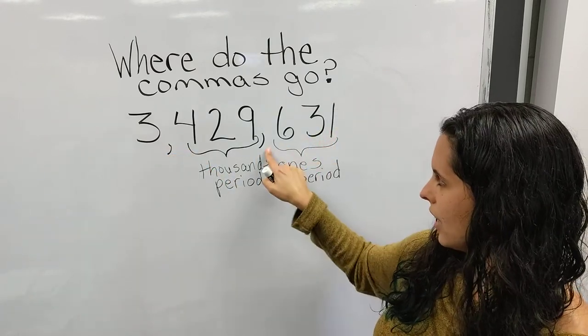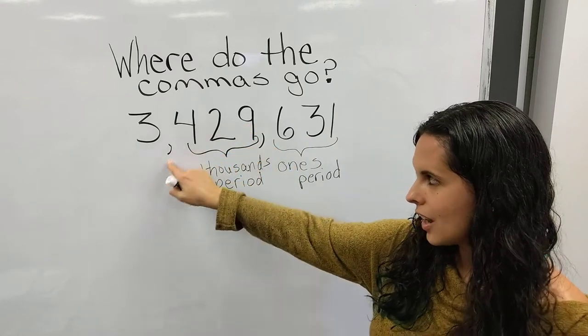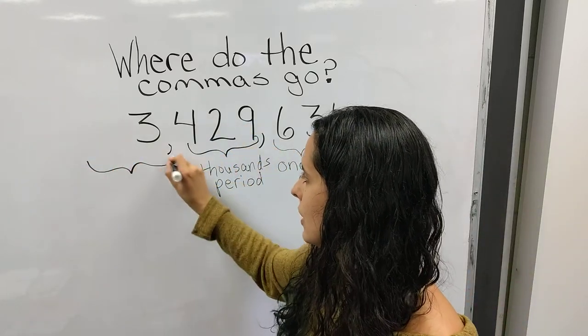So one, two, three, comma, one, two, three, comma. This comma separates the millions period.